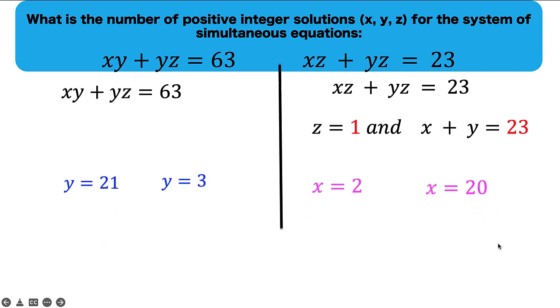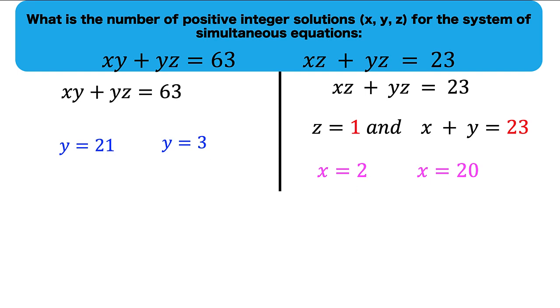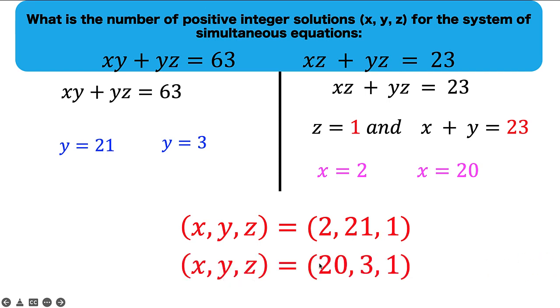So we now have these results. y equals 21, y equals 3, x equals 2, x equals 20. And for the solutions now of these Diophantine equations, we have (x, y, z) equals (2, 21, 1) or (x, y, z) equals (20, 3, 1).